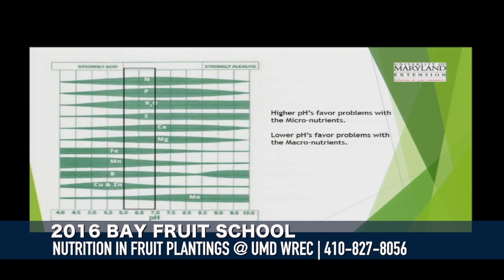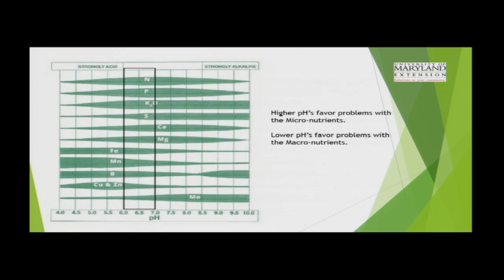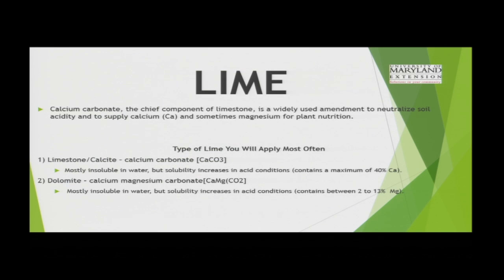In a nutshell, higher pHs — if you let it get above 7 — favor more problems with micronutrients, because those lines start getting narrower as we get into higher pHs. And when we get into lower pH problems, like if we're growing blueberries and we overshoot our pH down to 4, it starts limiting the macronutrients. So that's something to keep in the back of your mind when working with pH adjustments.